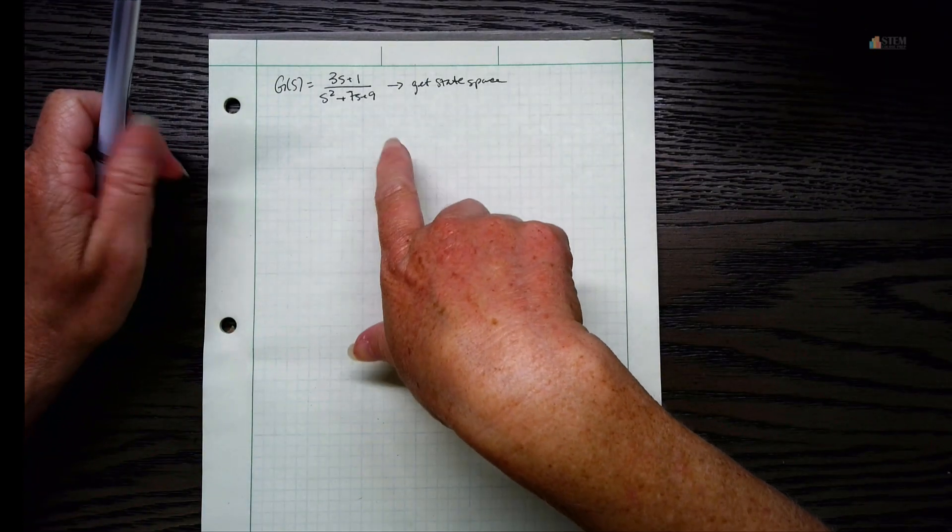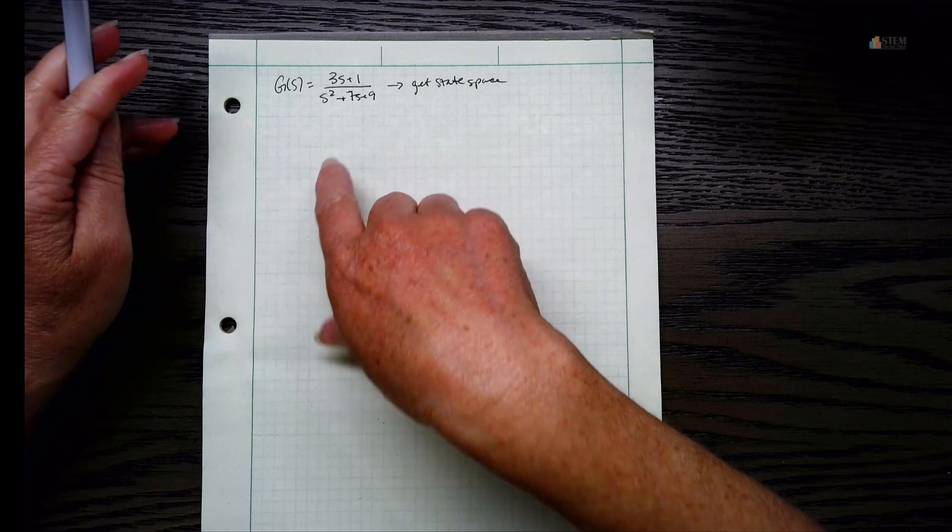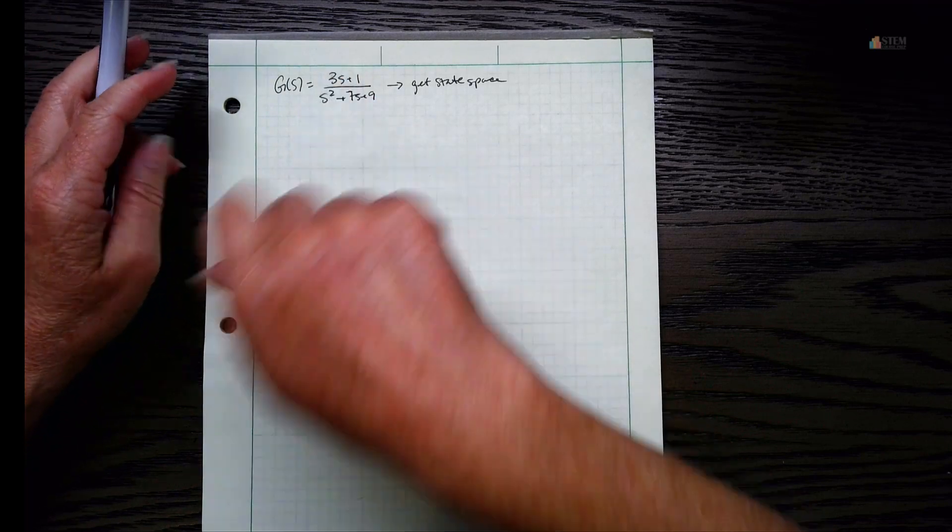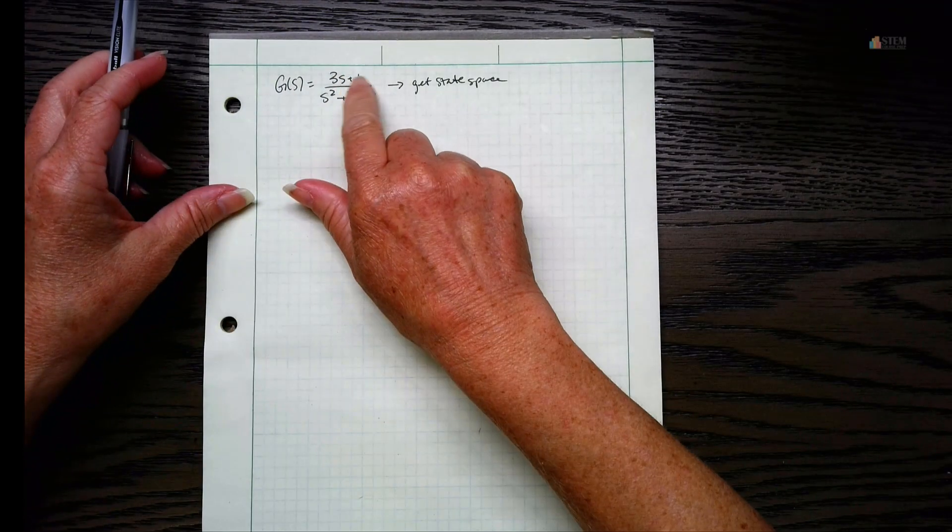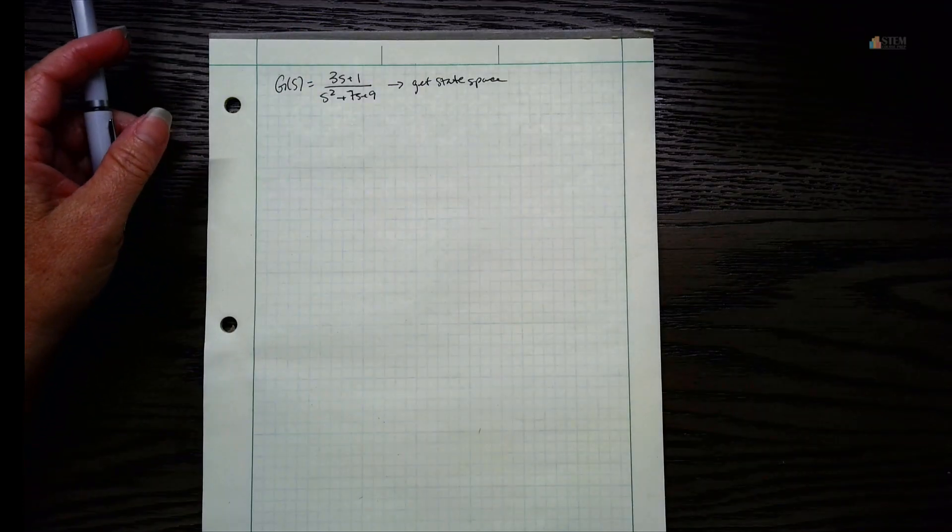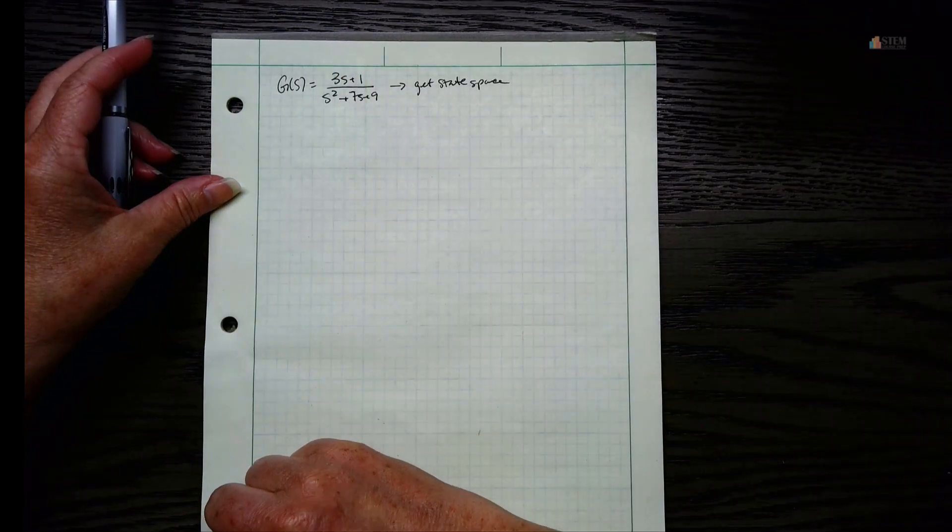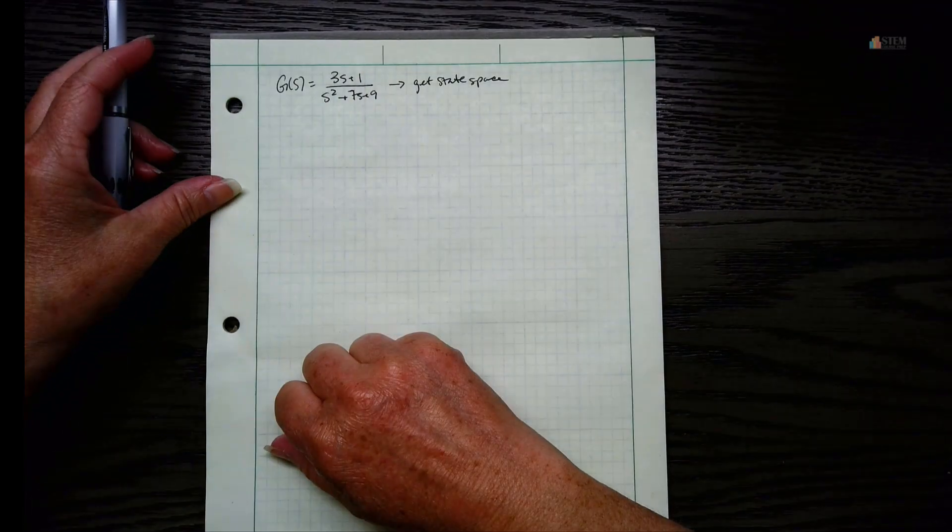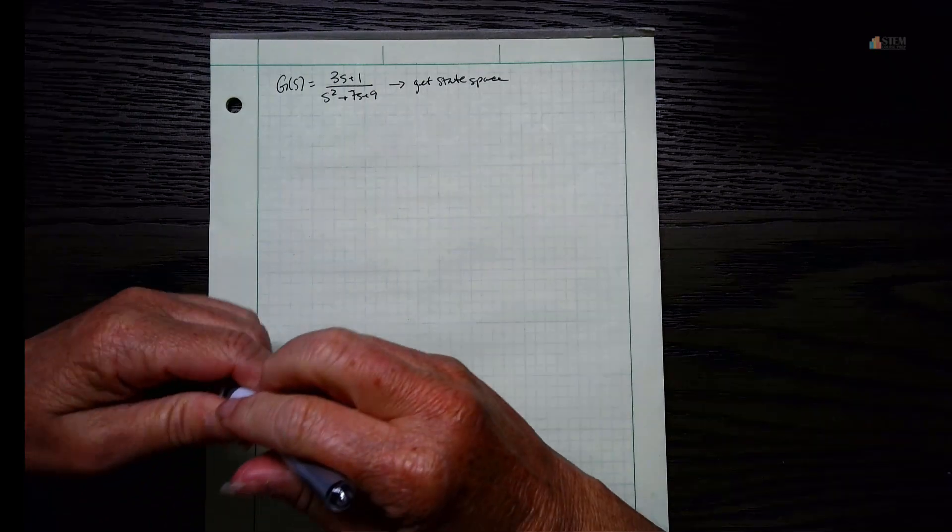Now I have another tutorial on YouTube that goes over this, but the numerator on that one is just a constant, like one I think. I had several people ask, what do we do if there's a polynomial up in the numerator? So that'll be what we cover here - how to handle this kind of case.